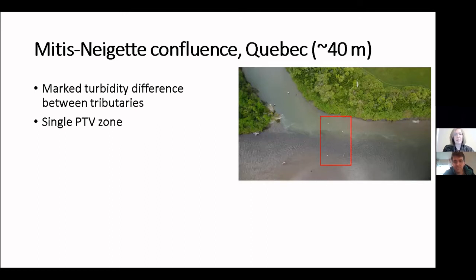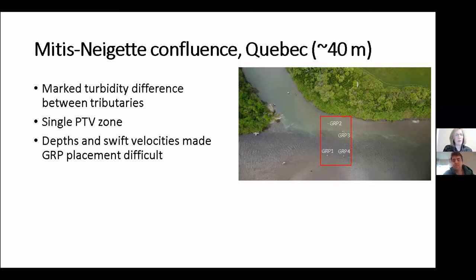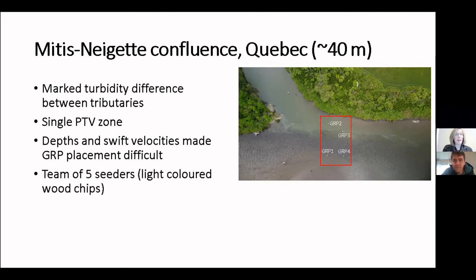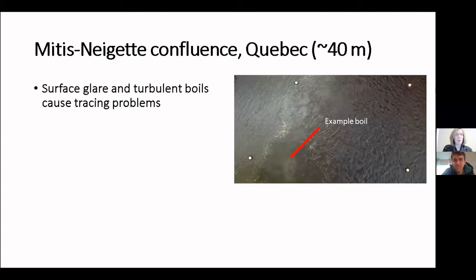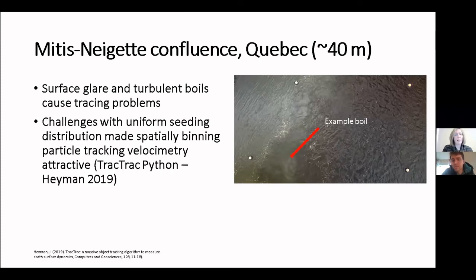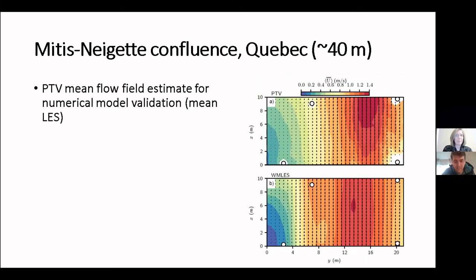The other site is the Mitis-Neigette confluence, also in Quebec, around 40 meters in width. Again there's a turbidity difference, and in this case we used PTV (Particle Tracking Velocimetry) within a single zone marked by a red rectangle, with four ground reference points. The velocity on the main channel limits is quite fast — over a meter per second — presenting challenges. There were five seeders using wood chips. Classic problems such as surface glare and turbulent boils are present at this site. With the challenges of uniform seeding, spatially binned PTV using the TrackTrack Python package by Jason became particularly attractive.